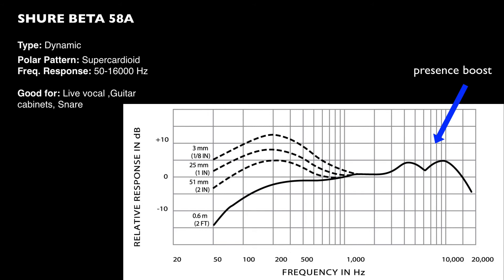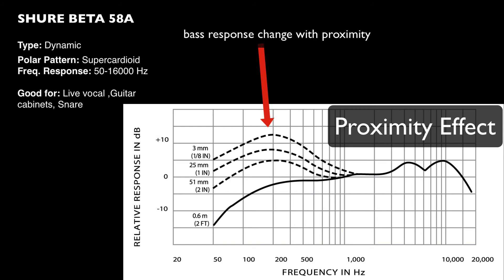The other really interesting thing about this microphone is the difference in the bass response. What it's showing you is the bass response at different distances. Now what we're seeing here is something called the proximity effect, which is the tendency of microphones to emphasize bass frequencies when you get very close to them. This is a very common characteristic of any directional microphone.